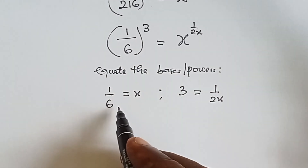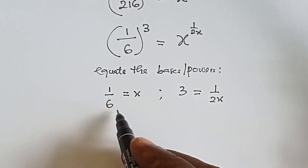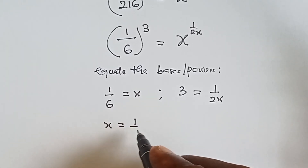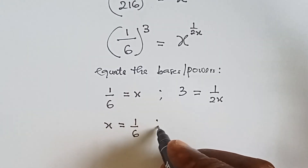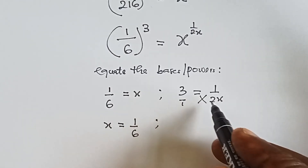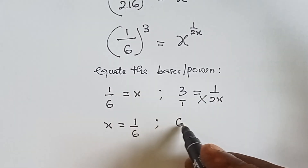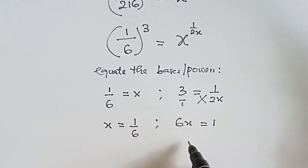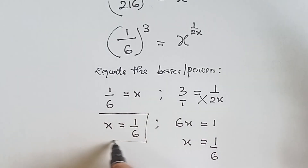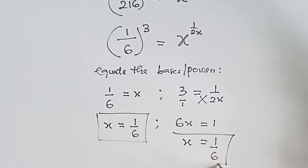So here we have x equals 1 over 6 already from equating the bases. From equating the powers, we cross multiply: 6x equals 1, and dividing both sides by 6 gives x equals 1 over 6. So x equals 1 over 6 from both equations.